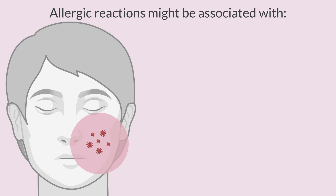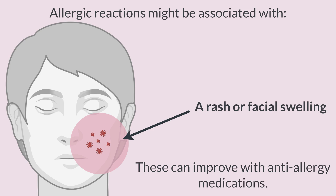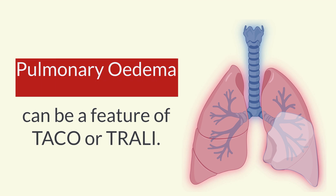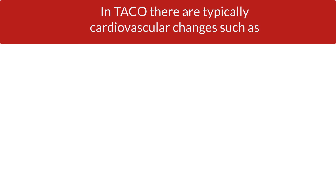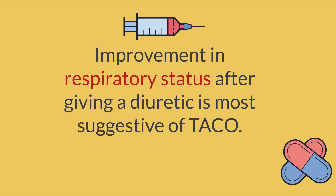Allergic reactions might be associated with a rash or facial swelling and improve with anti-allergy medications. Pulmonary oedema can be a feature of TACO or TRALI. In TACO there are typically cardiovascular changes such as raised blood pressure or tachycardia. Improvement in respiratory status after giving a diuretic is most suggestive of TACO.